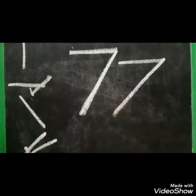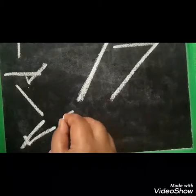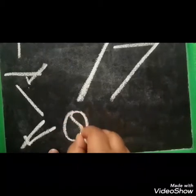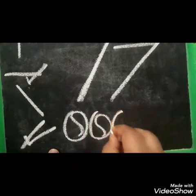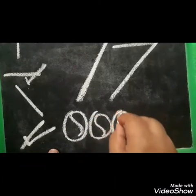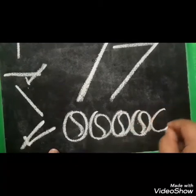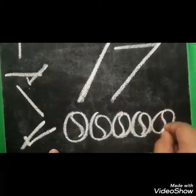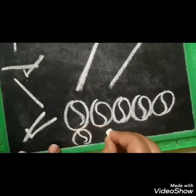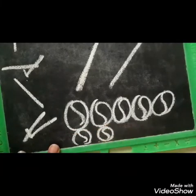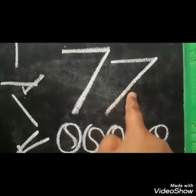Now for 7, how many balls? Count: 1, 2, 3, 4, 5, 6, 7. Seven balls — number 7.